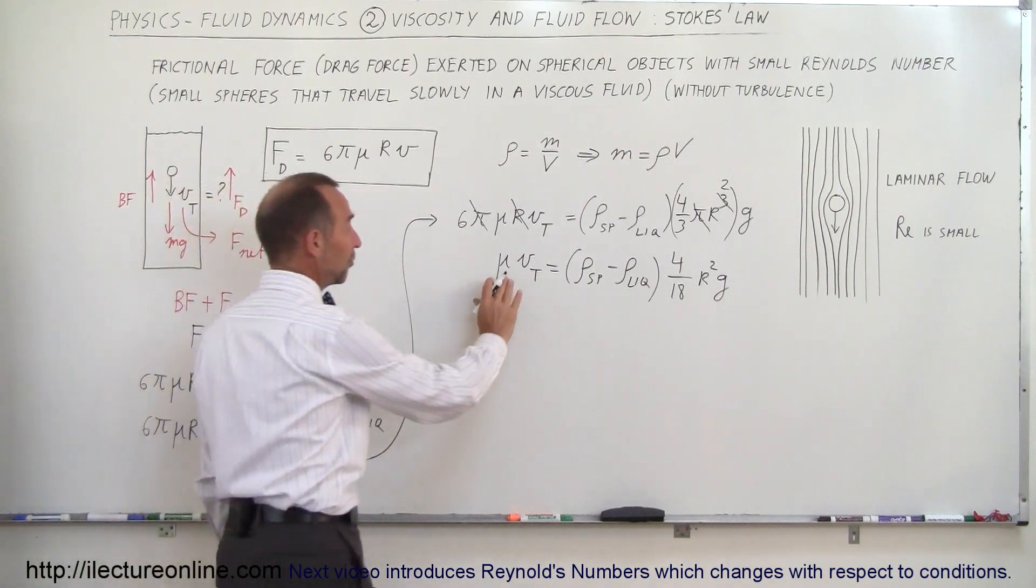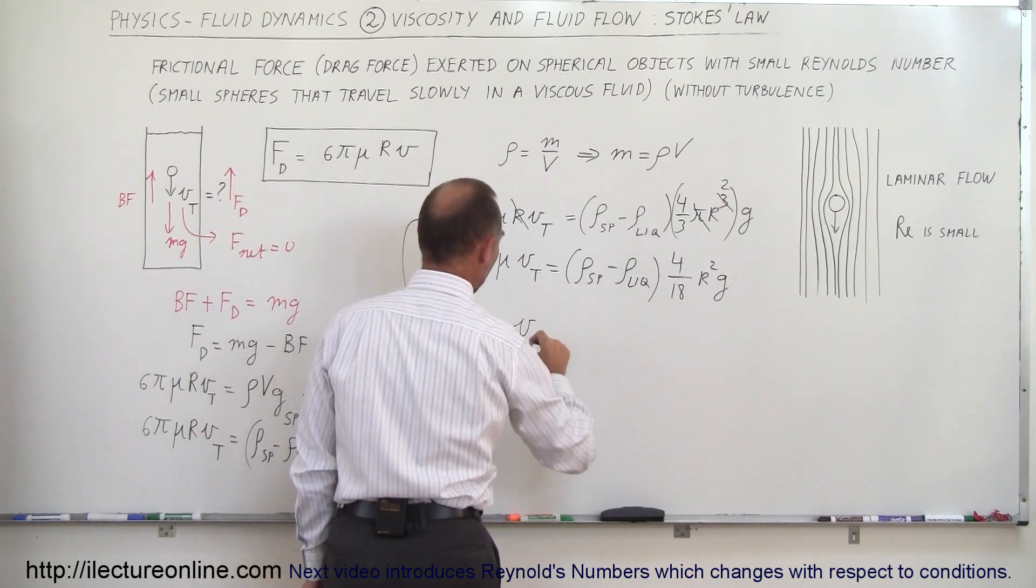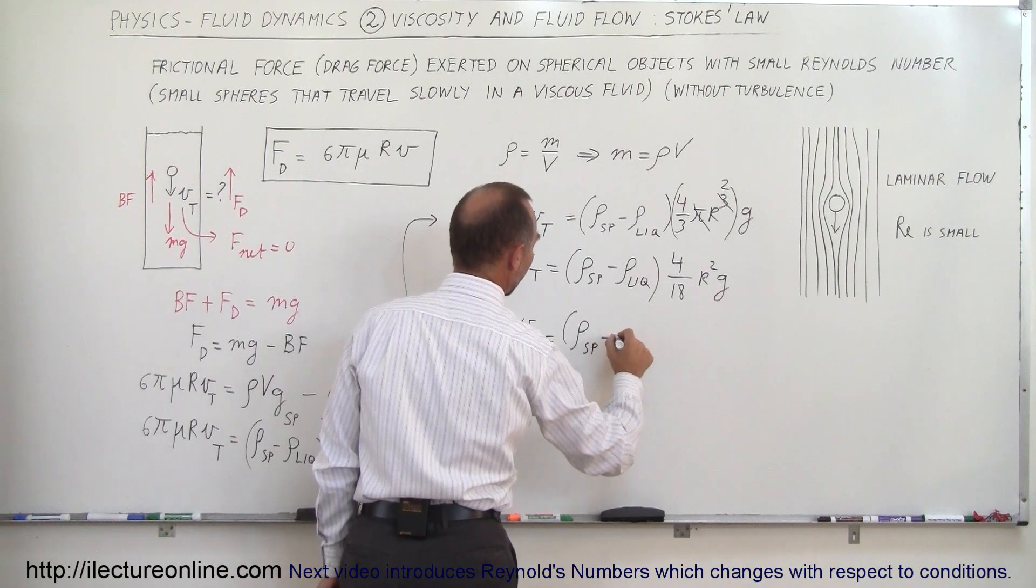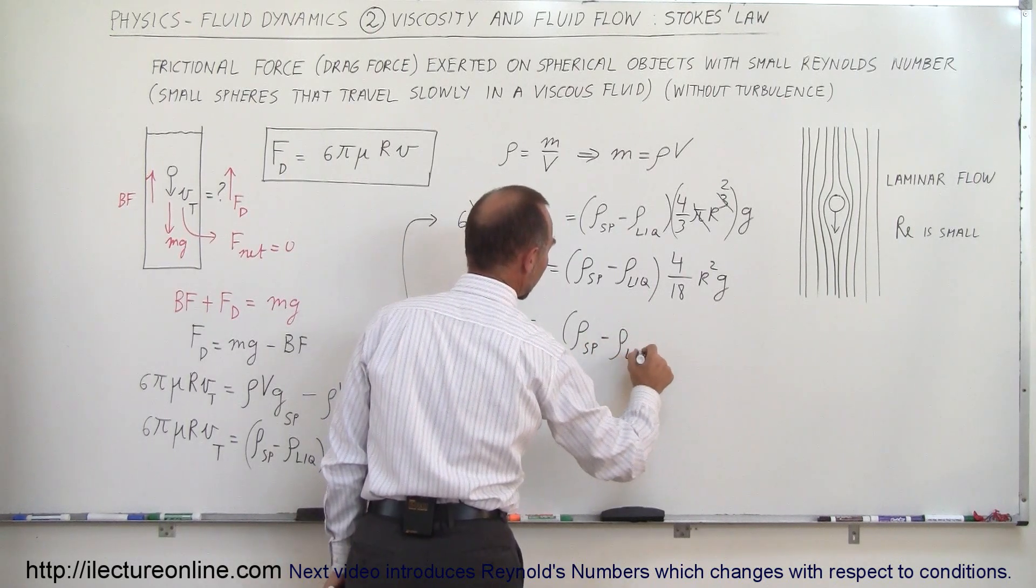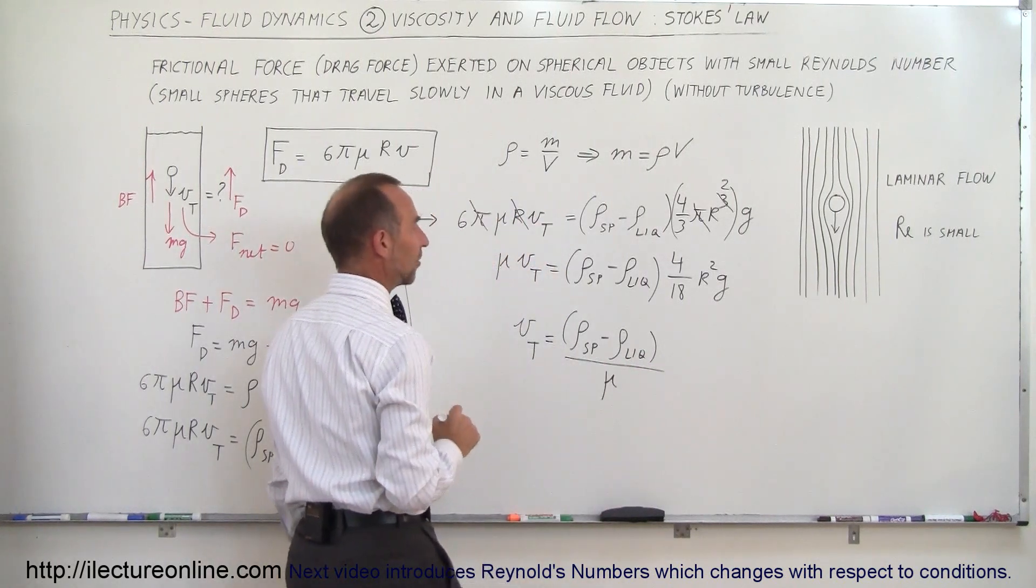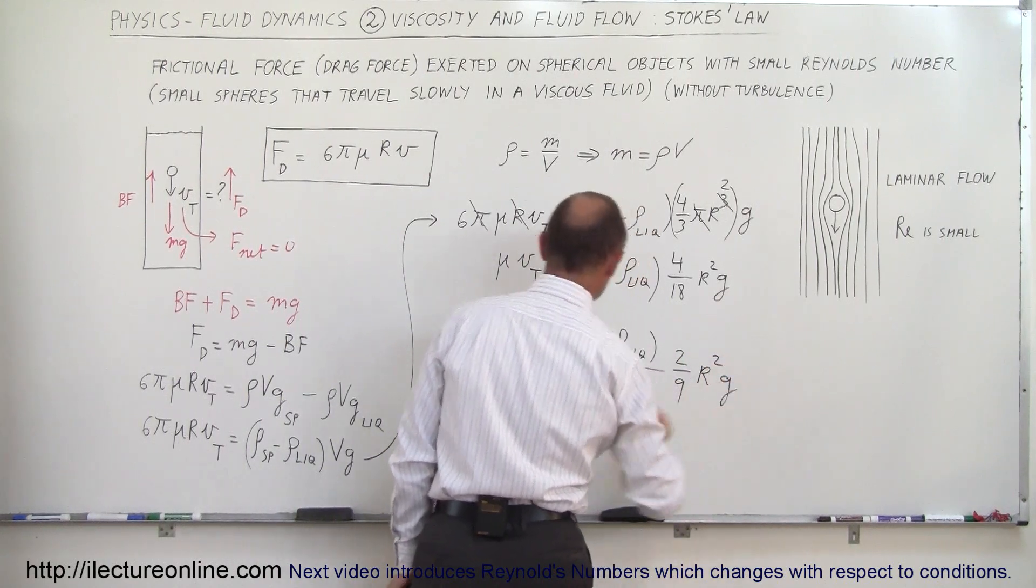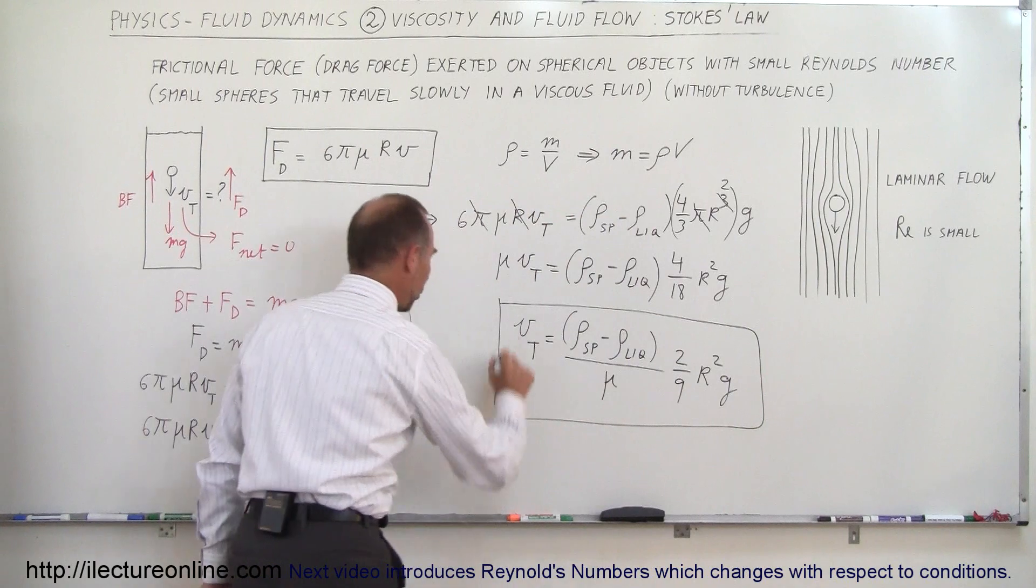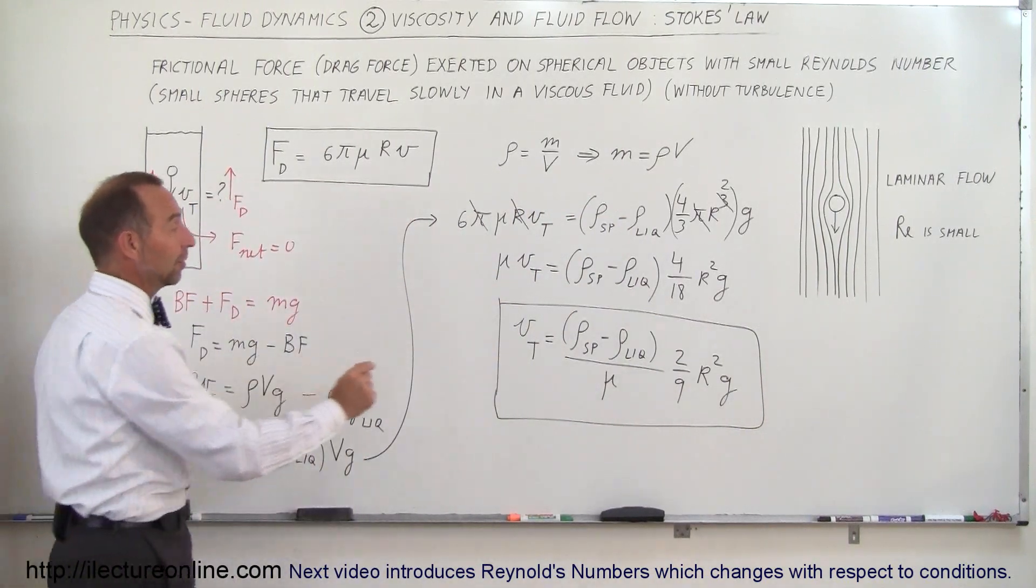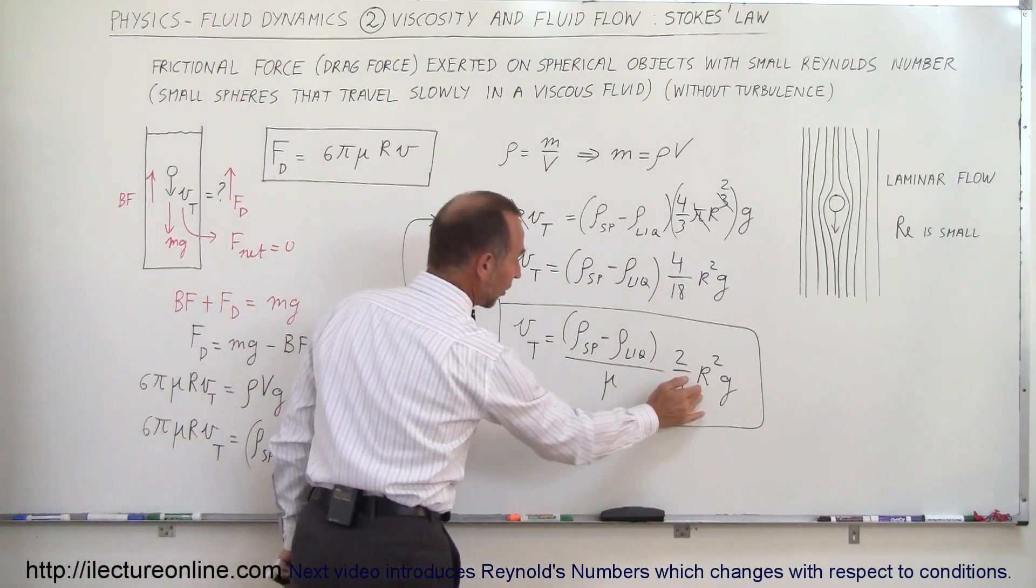Now we can take the coefficient of viscosity to bring it down there, simplify that, and now we have an equation for the terminal velocity. v_t is equal to the difference in the densities divided by the coefficient of viscosity times 2/9 times the radius squared times g. And this is now the equation of the terminal velocity of a spherical object moving through a viscous liquid, where r is the radius of the object.